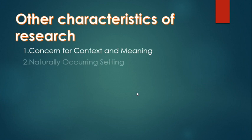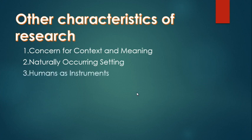Number two: Naturally occurring settings. Qualitative research studies behavior as it happens naturally in a school, classroom, community, or an organization. Number three: Humans as instruments. Only a human being can do the fieldwork methods such as interview, observation, and documentary analysis.